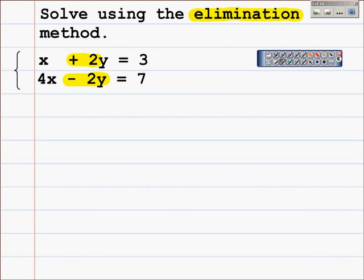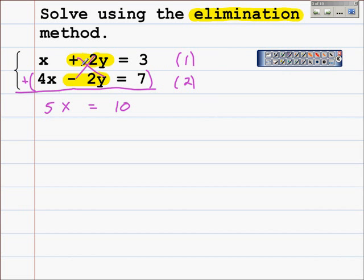But using elimination, we can notice that the y terms have the same but opposite side coefficients, plus 2y and minus 2y. So if we add these two equations together, line 1 and line 2, the result will be 5x equals 10. These two terms cancel; in reality they're additive inverses so they become zero. Here's line 3. To continue to solve this equation, we divide each side by 5, giving us x equals 2.